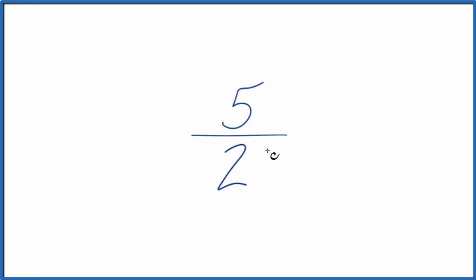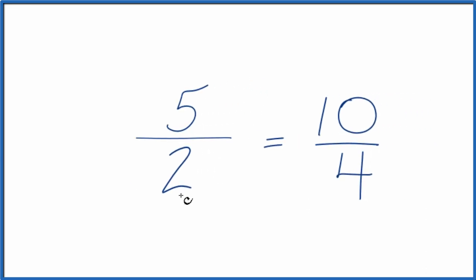So why don't we just double 5 and double 2? 5 times 2 is 10, 2 times 2 is 4. So 10 fourths, that's an equivalent fraction for 5 halves. We could also triple this.